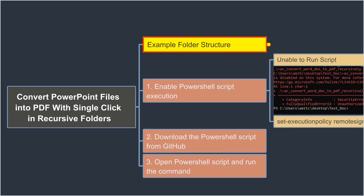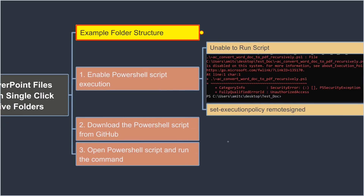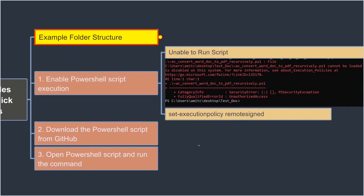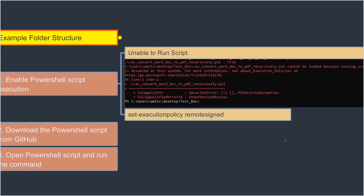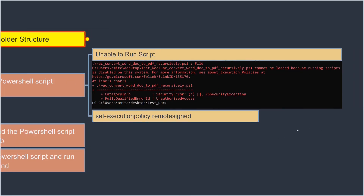Now, if you have never used PowerShell before on your computer and you try to run a PowerShell script, it may give you an error message — basically saying that you won't be able to run a script because it's disabled on your system.